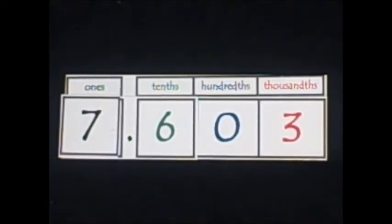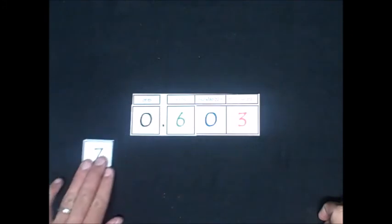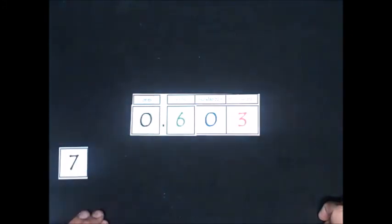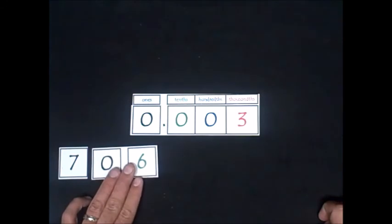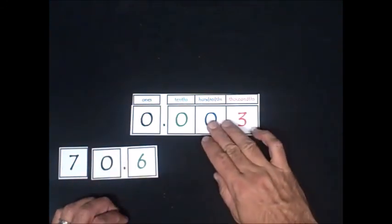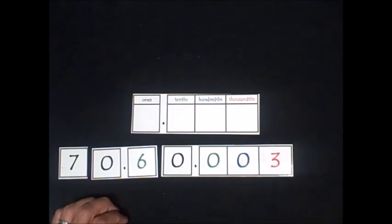Pause the video. Write this number in expanded form, and unpause to check. 7 plus 6 tenths plus 3 thousandths. Let's go.